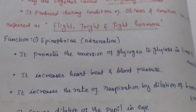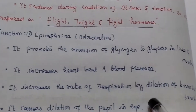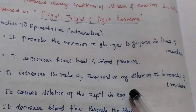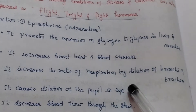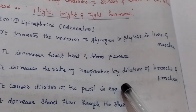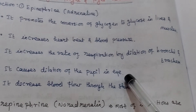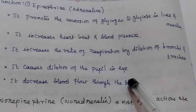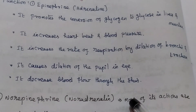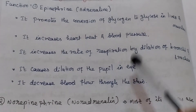The functions of epinephrine include promoting the conversion of glycogen to glucose in the liver and muscles, increasing heartbeat and blood pressure, and increasing the rate of respiration by dilation of the bronchi and trachea. It also causes dilation of the pupils in the eyes and increases blood flow through the skin. Norepinephrine performs similar functions.